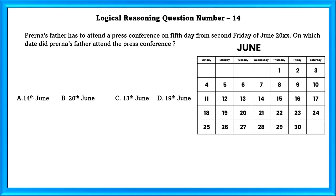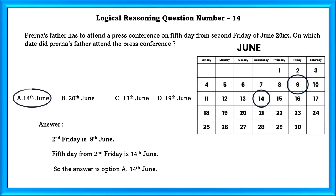Logical Reasoning Question Number 14. Pryan's father has to attend a press conference on the 5th day from the 2nd Friday of June 20. On which date did Prasanna's father attend the press conference? The 2nd Friday is 9th. And the 5th day from the 2nd Friday is 14th. So our answer is 14th June.